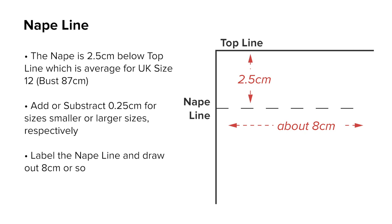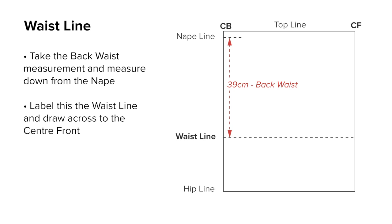Square across for a guide line of 8 centimeters or so. The waist line. To find the waist line, measure down from the nape using the back waist measurement. Square across to the center front and label it waist line.